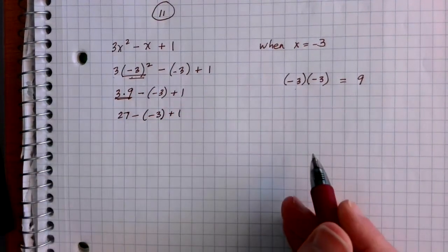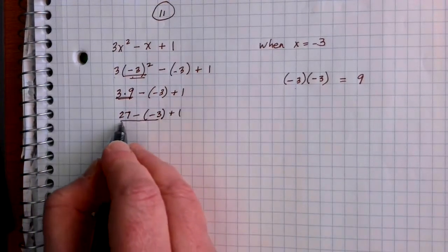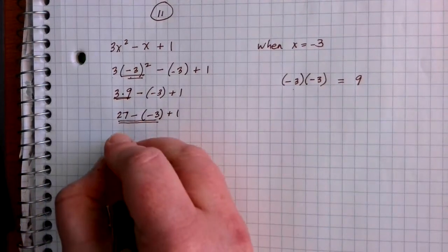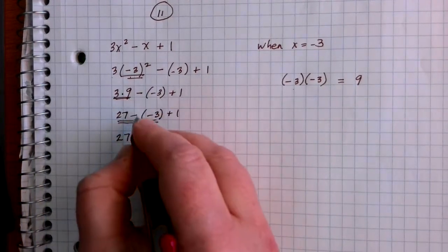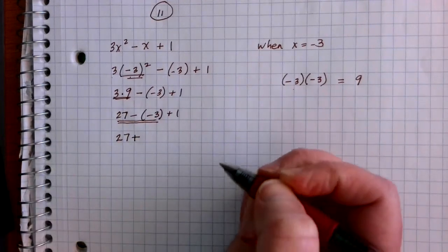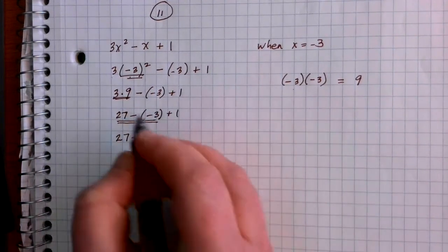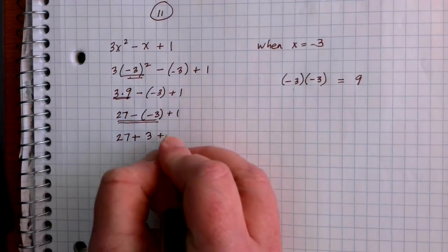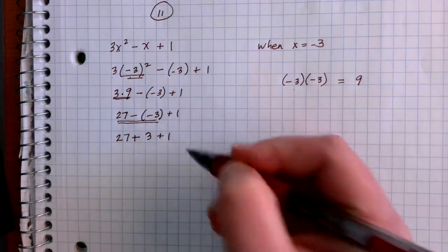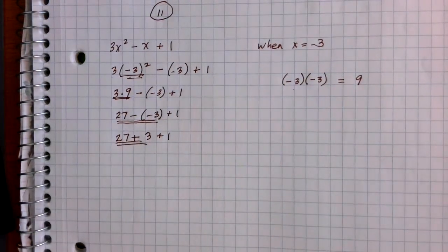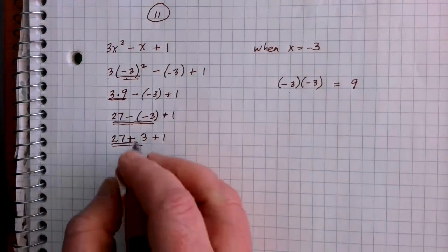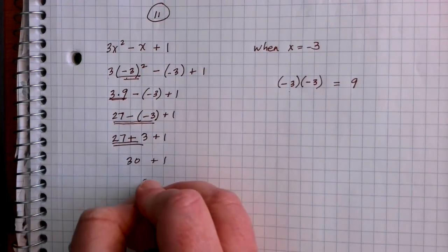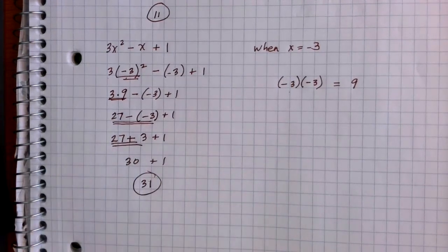Now I'm on addition and subtraction. I do whatever comes first, left to right, so I'll do the subtraction first. Remember, we change it to an addition problem and change the sign of the number that comes after — so negative 3 becomes positive 3. I've got 27 plus 3: same signs, all positive, giving 30. Then I add that last 1 to get my final solution of 31.